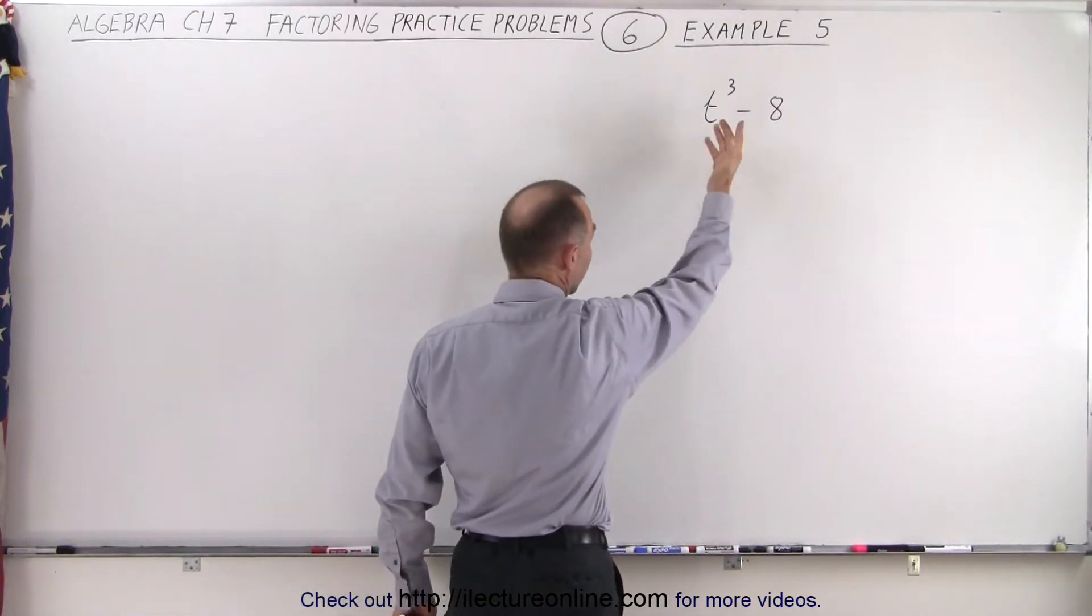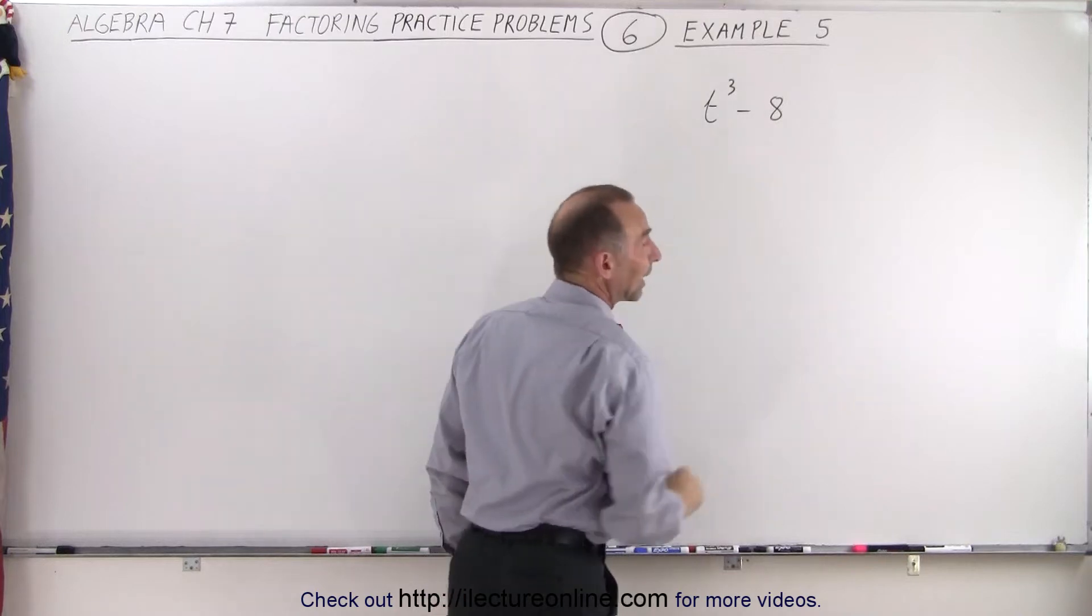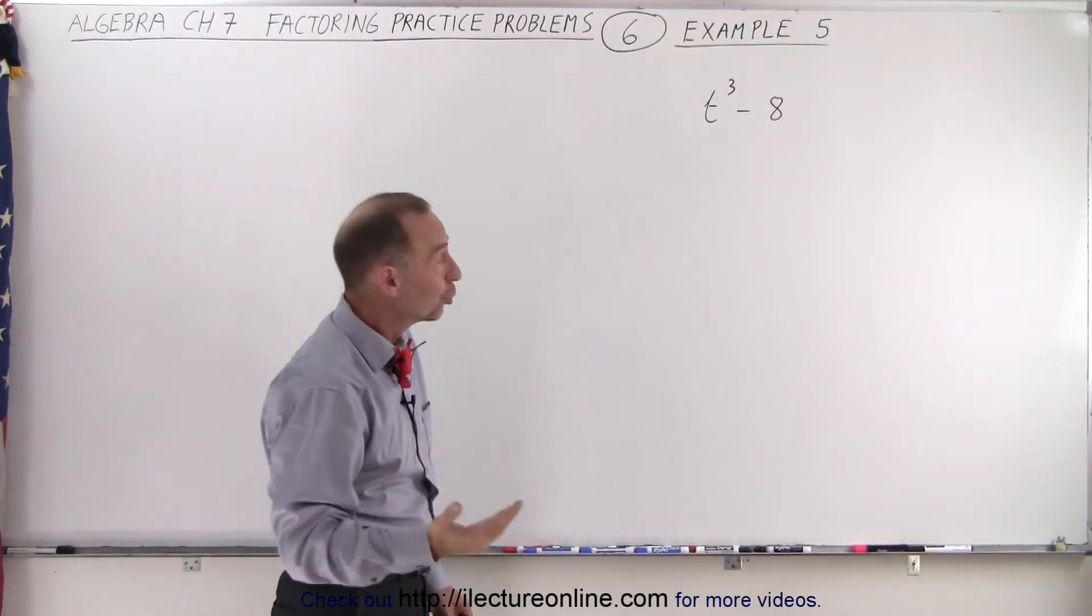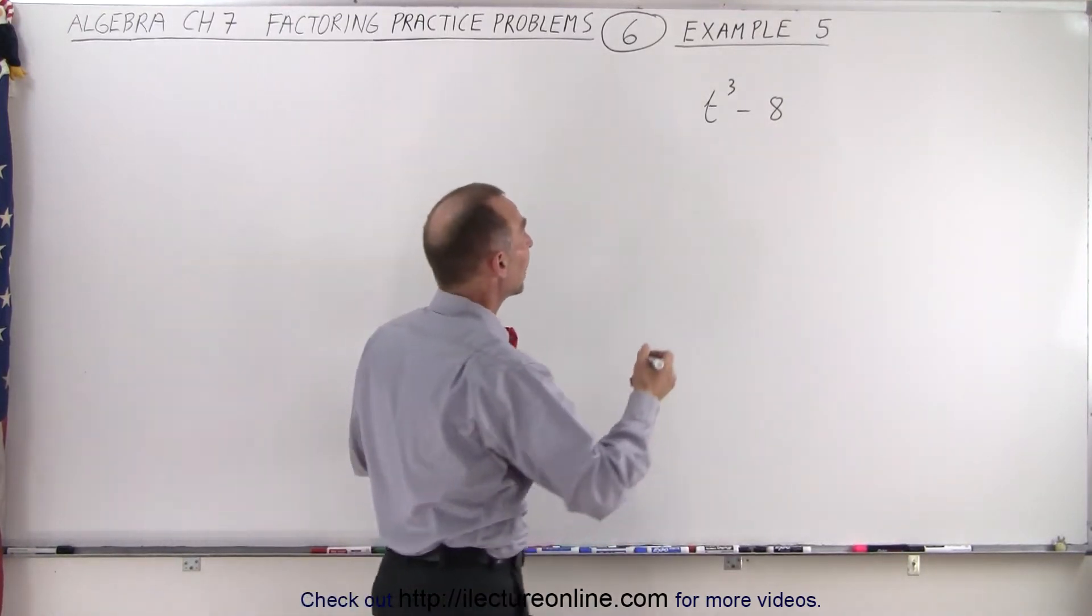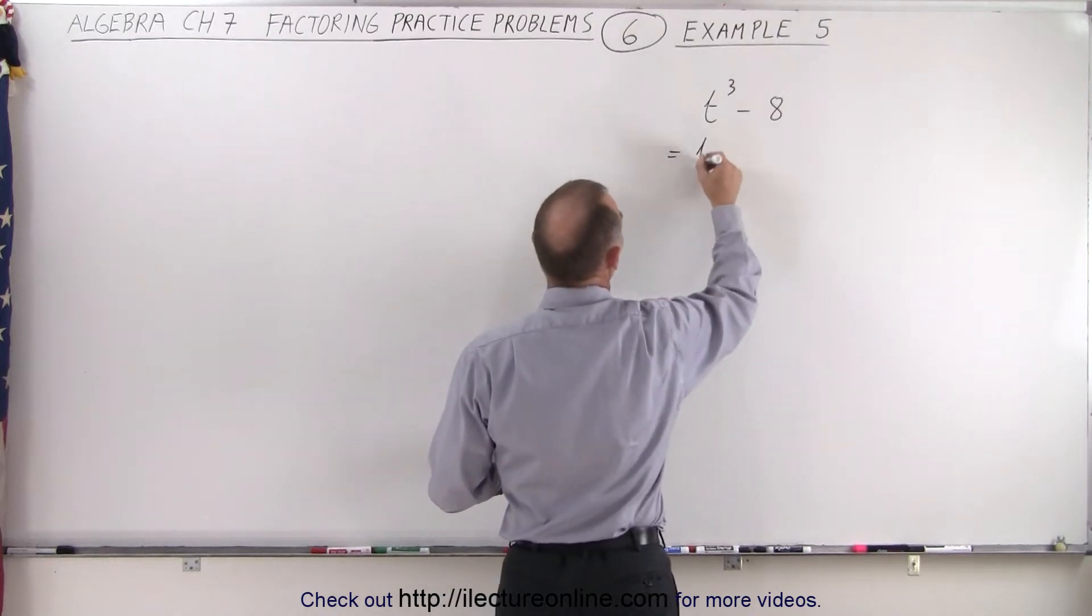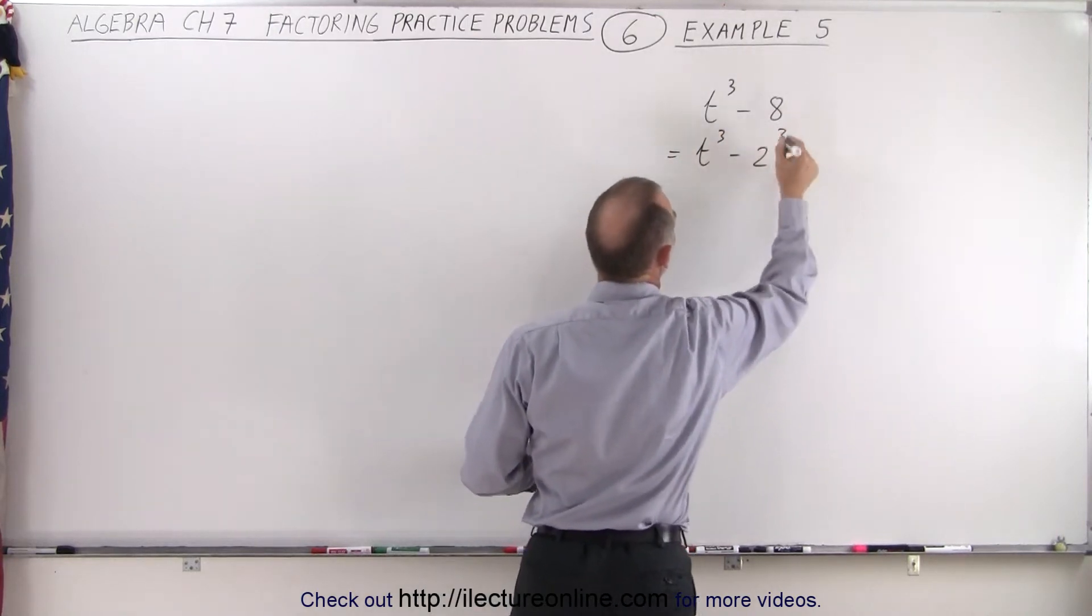t cubed, of course, is well, that's cubed. How about the number 8? You have to realize that 2 cubed is indeed equal to the number 8, so this can be written as t cubed minus 2 cubed.